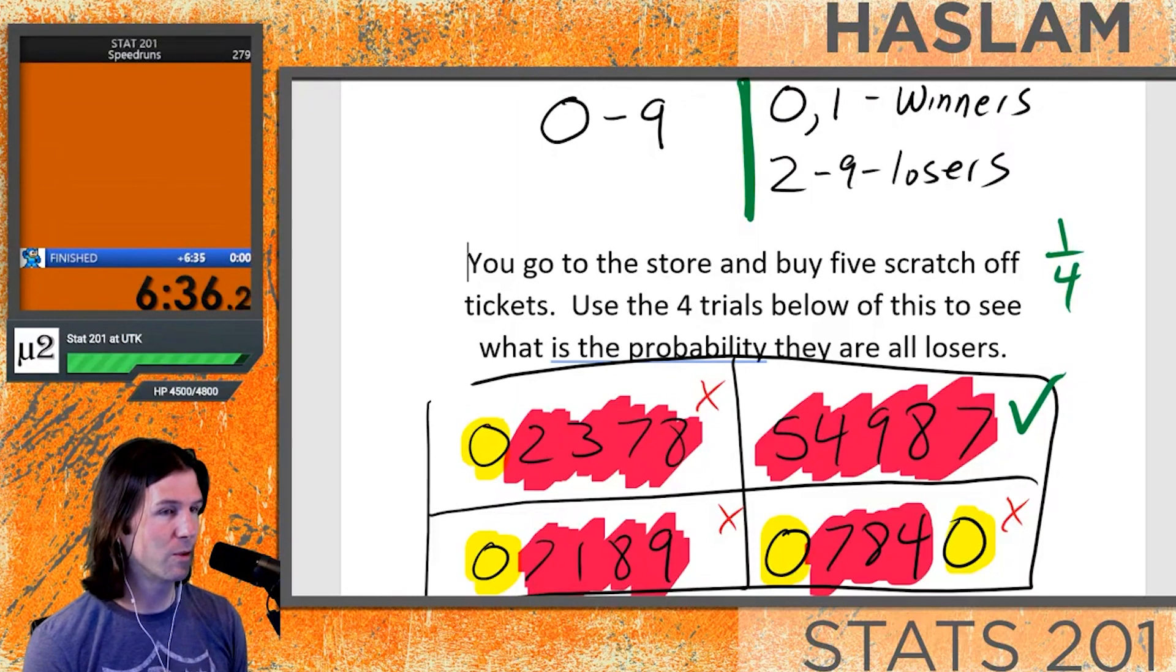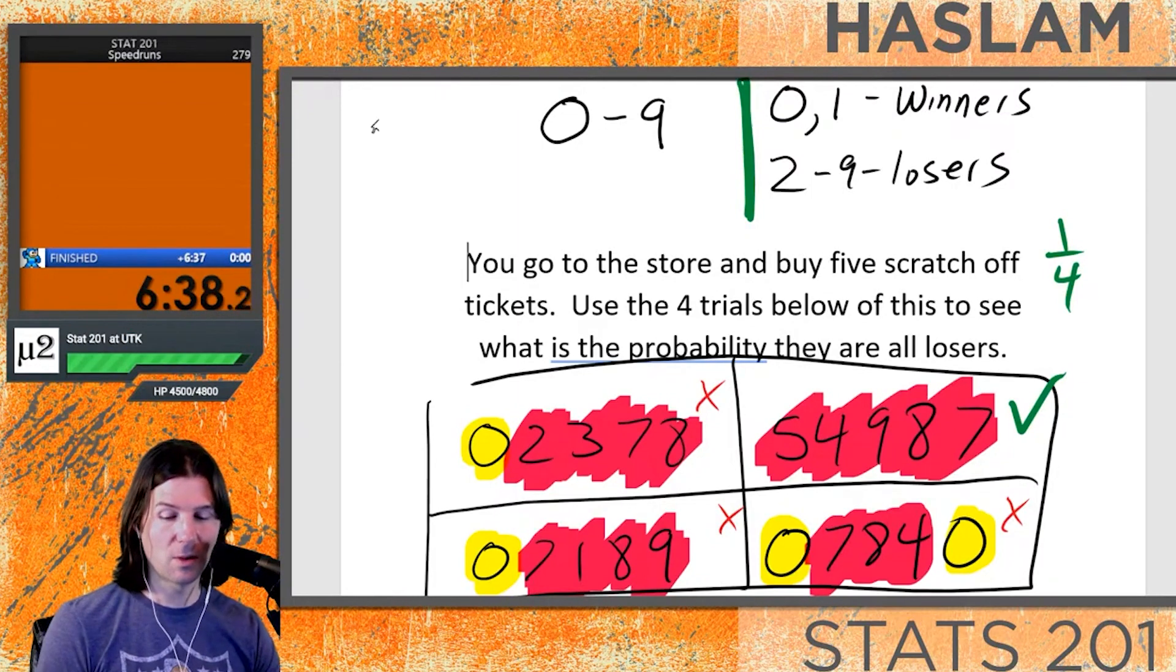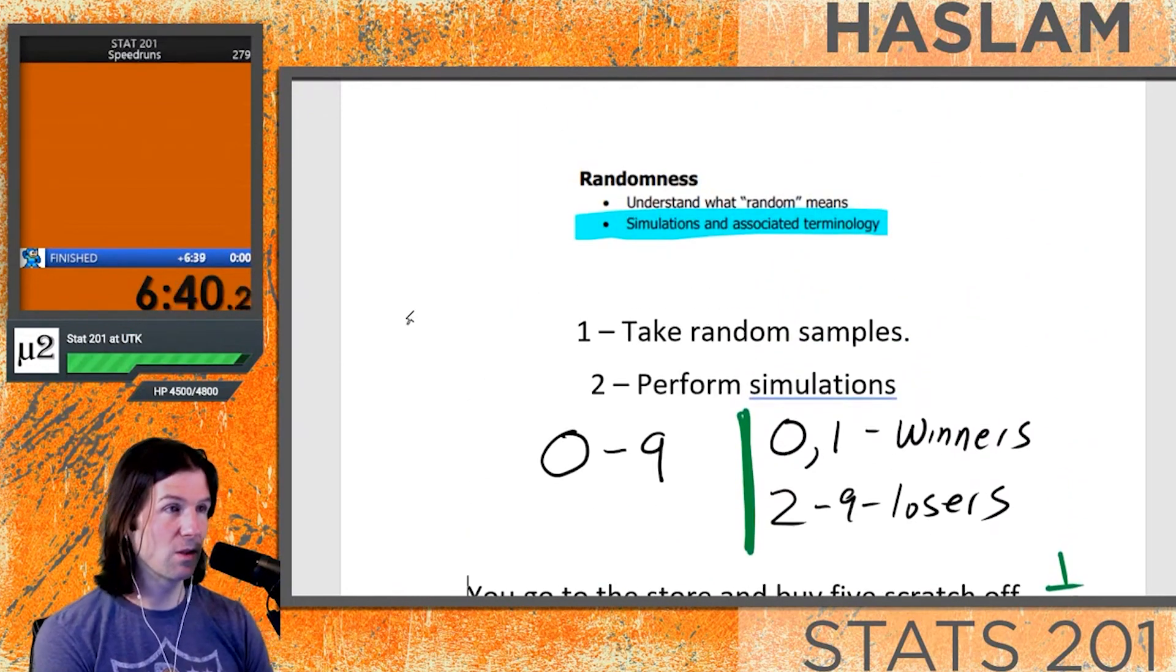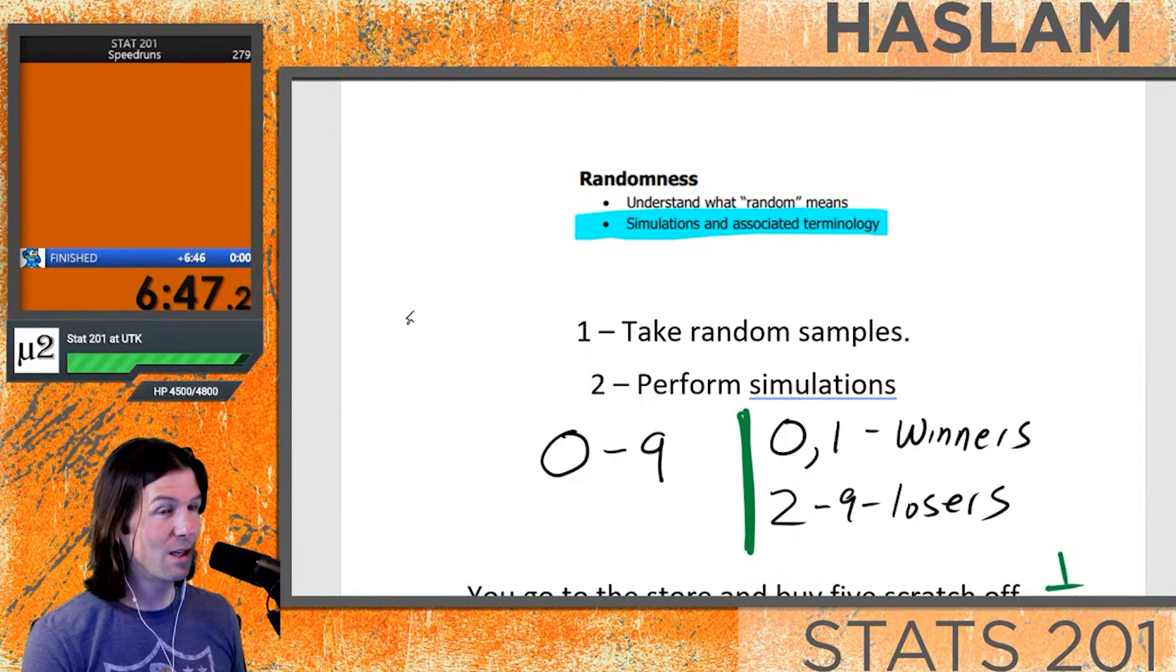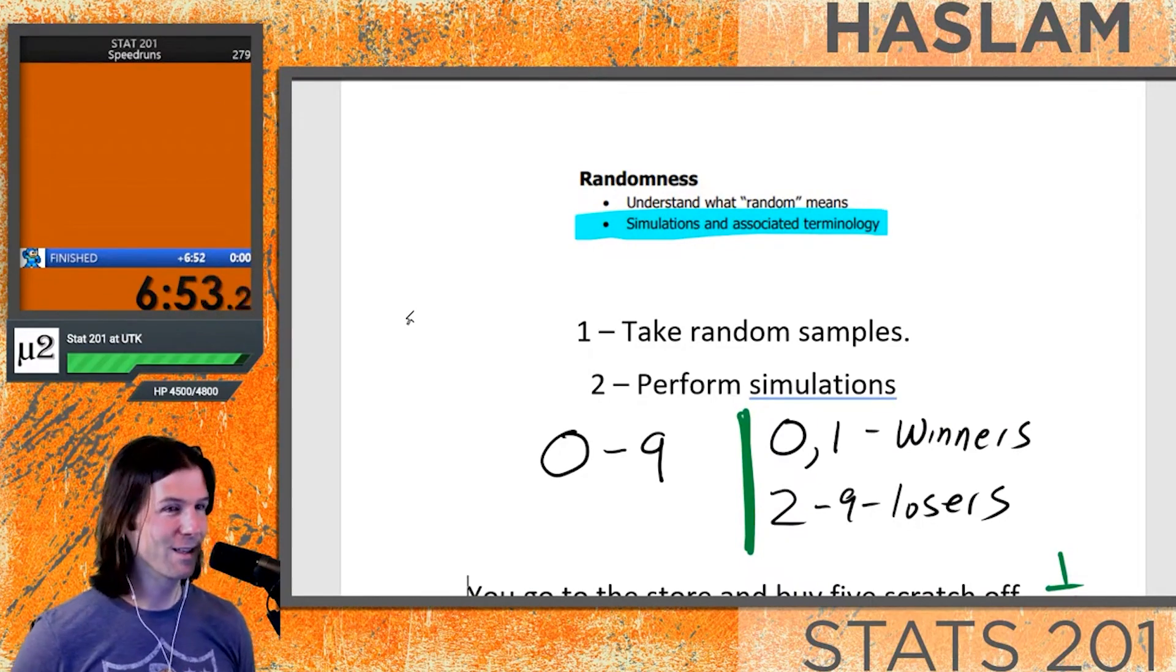There's many ways to do simulations, and we use simulations to look at real world events like buying lottery tickets, basketball games, or flight simulators. All different things can be simulated. Statisticians use randomness as a tool. Practice the chapter, practice the homework, good luck on the test.